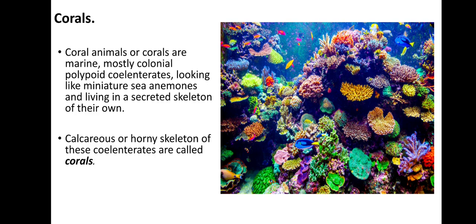Let us start with what corals are. We are talking about Cnidaria. Among these Cnidarians there are some special ones which secrete an exoskeleton. These are generally marine and they are special because they secrete that exoskeleton — these are generally called coral animals. They are animals actually, generally marine and mostly colonial, but there are a few individual corals too. Since they secrete the calcareous skeleton they are called corals.